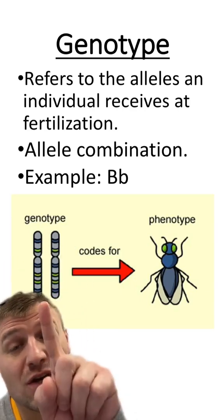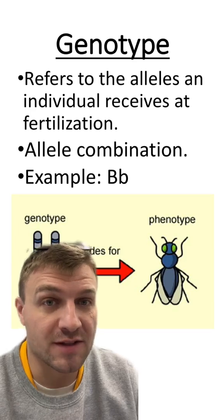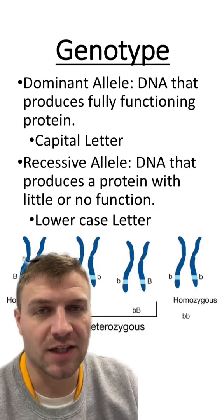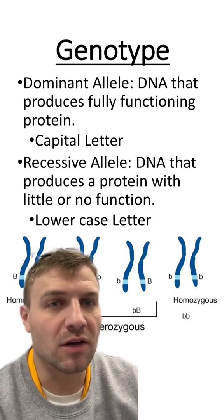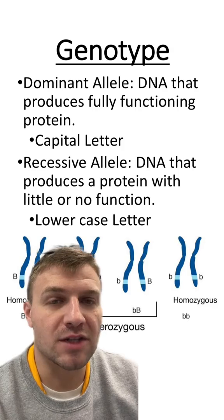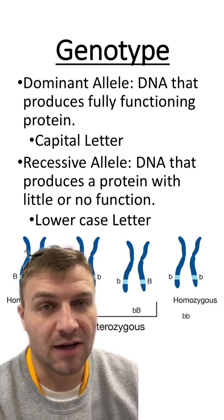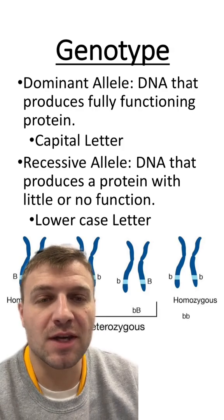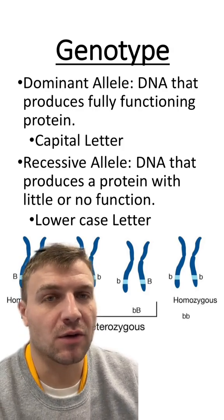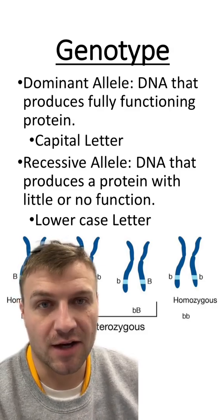These genotypes are going to code for the phenotype of an organism, or the physical characteristics. Within genotypes, there are two different types of alleles. Dominant alleles are alleles where the DNA is going to produce a fully functioning protein — we represent dominant alleles with a capital letter. A recessive allele is a portion of DNA that codes for a protein with little or no function, and we represent recessive alleles with a lowercase letter.